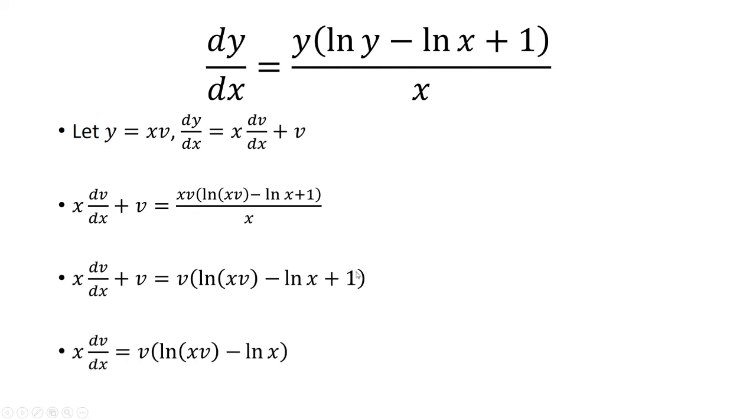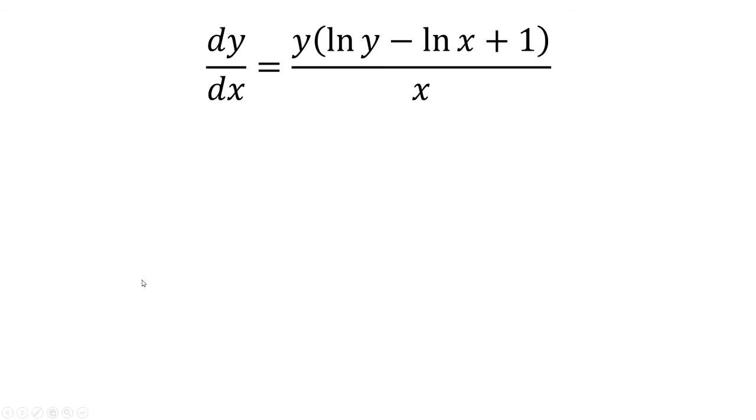Now, v is going to multiply 1, and that's just going to be v, and that cancels out with this v. Next, I can break up ln of xv as ln of x plus ln of v. So this was one of the log properties.